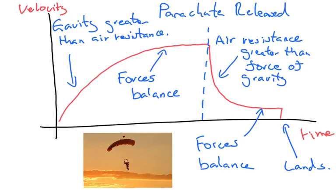Here's the velocity time graph for a man jumping out of an aeroplane and then releasing a parachute. Initially, just like the vehicle, he'll accelerate. Gravity is much greater than air resistance. But as the man's falling, the air resistance gets greater and greater and eventually the forces balance here so his velocity becomes constant, it's not changing.